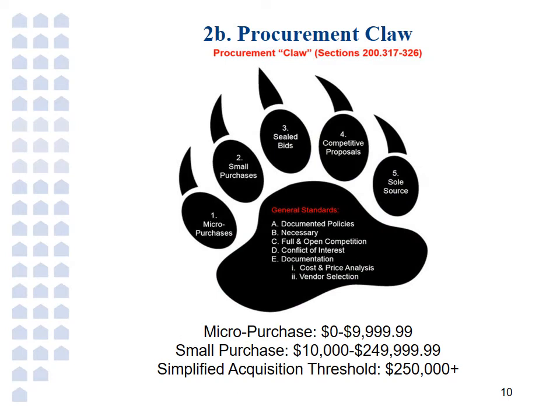This tool is the Procurement Claw, which I have included here as a helpful illustration of the many different methods of making purchases with federal funds. You'll notice that each manner of purchase is listed with short detail about some general statements of procurement. You can see one through five there — the different methods of making purchases — and I have listed at the bottom the thresholds as set forth in the regulations in 2 CFR 200.